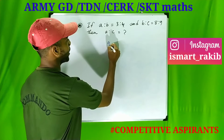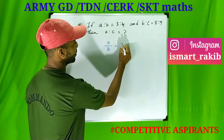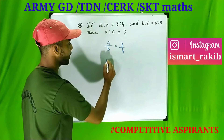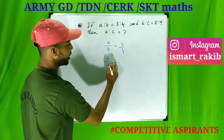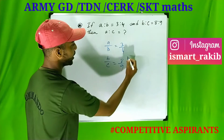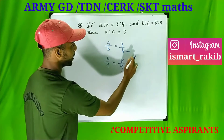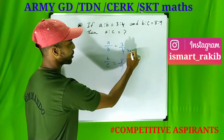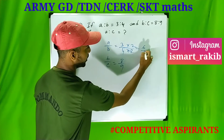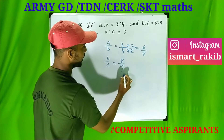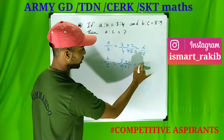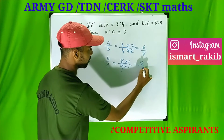First, we will write a by b ratio 3 by 4, and we will write b by c ratio 8 by 9. Then, we will write b to 7. We will write a by 2 by 6 by 8, and we will write a by 1 by 8 by 9.